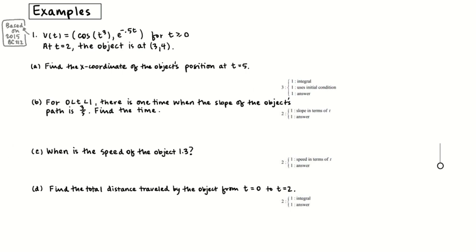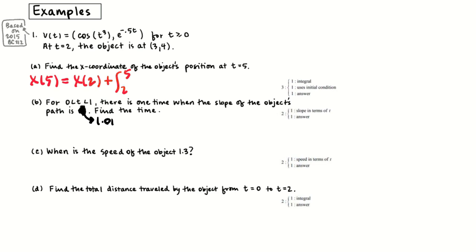The first example is based on 2015 BC number 2. Note: the value needs to be changed to 1.01 — the functions are cosine of t³ for x' and e^(−0.5t) for y'. We're going to find the x-position of the object at t equals 5 using the same technique. We say x(5) equals x(2) plus the integral from 2 to 5 of x prime of t dt.